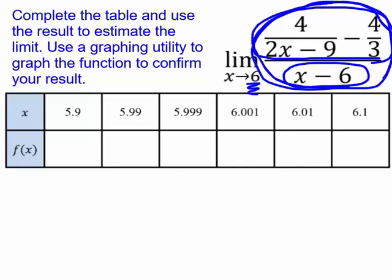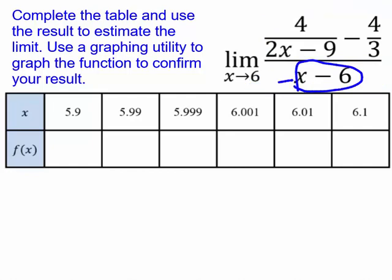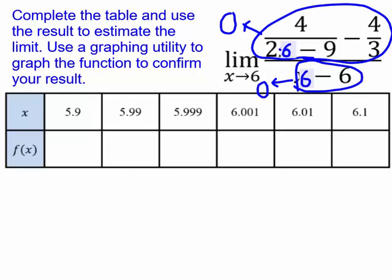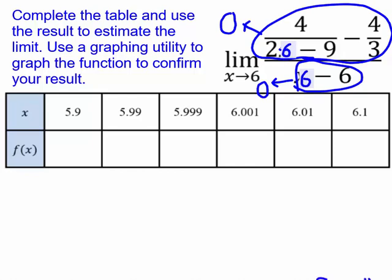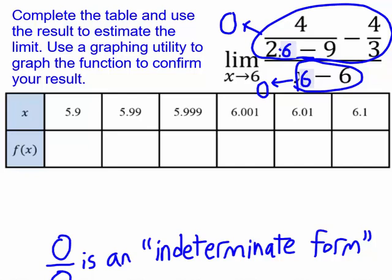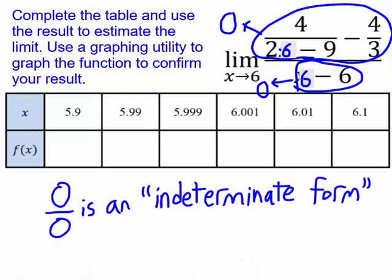And sometimes, if that gives you a real result, that will be your answer. But in this case, we got 0 over 0. Plugging 6 into the denominator gave us 0, and plugging 6 into the numerator also gave us 0. And while you may be inclined to say, oh, that's undefined, well, it is undefined, but it's a special kind of undefined. 0 over 0 is something that's called an indeterminate form.